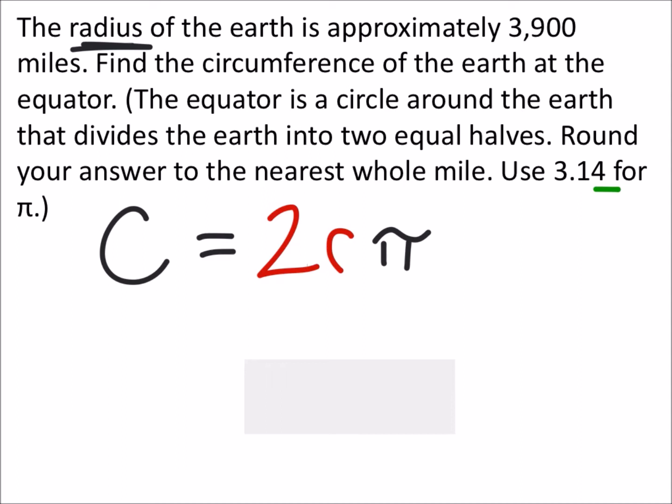And now we can replace these values. So we have two. We've got a radius here, which tells us is the 3,900 miles. And we're going to replace pi with the value that it wants us to use, which is 3.14.